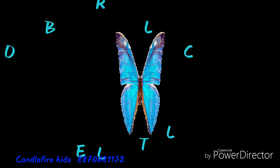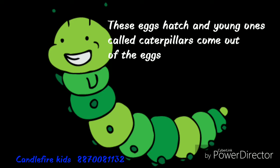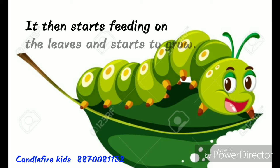Hi kids, we are going to learn about the life cycle of a butterfly. A butterfly lays eggs on the leaves of a plant. These eggs hatch and young ones called caterpillars come out of the eggs. The caterpillar then starts feeding on the leaves and starts to grow.